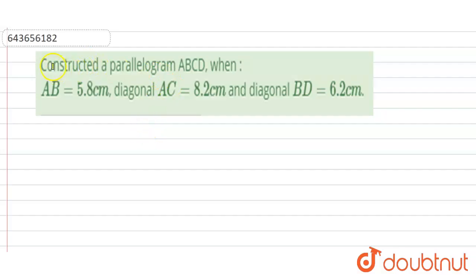Hello students, in this problem we have to construct a parallelogram ABCD when the side AB is given 5.8 cm, diagonal AC is equal to 8.2 cm, and the diagonal BD is equal to 6.2 cm.